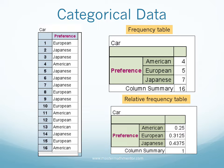A survey of 16 adults asked, of American, European, and Japanese, which make of car do you prefer to drive? To organize the data, we create a frequency table — a table that counts the number of each response. The quantity of each response can be expressed as a relative frequency, which is a percentage of the total amount of data. A table of relative frequencies is called a relative frequency table. To find the relative frequency, divide the frequencies by the number of data n, which is 16.